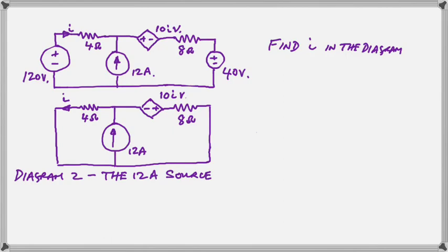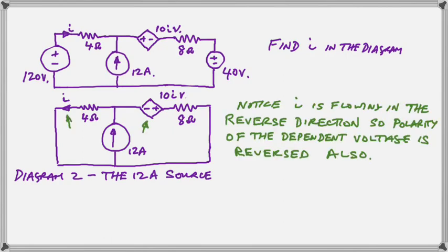Notice also that in this diagram, because the 12-amp source is pumping current through the 4-ohm resistor in the opposite direction to the I in our original diagram, this means that you have to reverse the polarity of the dependent source. So if the current changes direction, the voltage which is dependent on it will also change polarity. This is why I've written this in green, so make sure you don't miss this point. I is flowing in the reverse direction, so we reverse the plus and minus of the dependent voltage also.